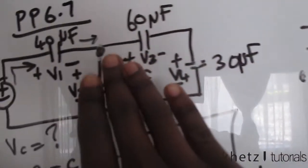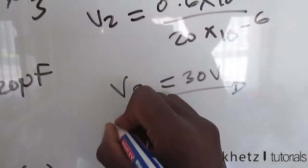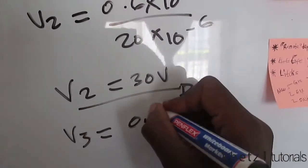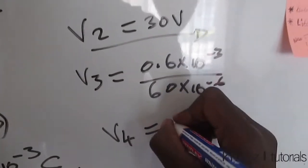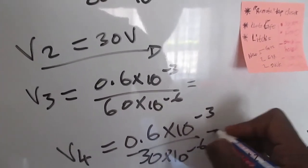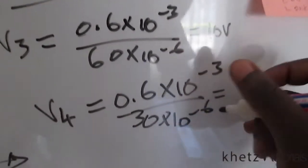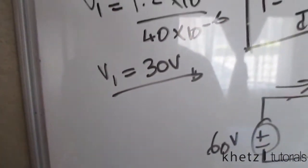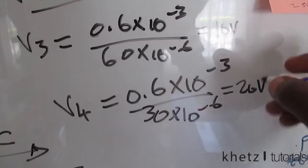Moving on to V3 and V4: since Qt divided by 2 applies to this entire branch and the 60 and 30 microfarad capacitors are in series, the same charge flows through both. So V3 equals 0.6 times 10 to the minus 3 divided by 60 microfarads, giving 10 volts. V4 equals 0.6 times 10 to the minus 3 divided by 30 microfarads, giving 20 volts. In summary: V1 equals 30 V, V2 equals 30 V, V3 equals 10 V, and V4 equals 20 volts.